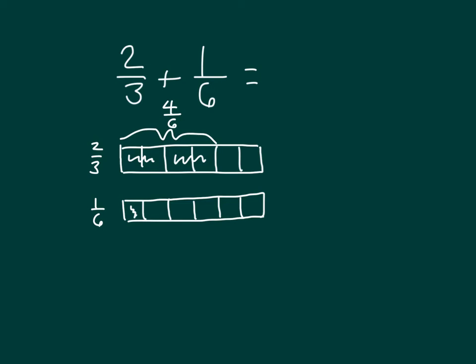And since I now have like units, I can just take four-sixths and add it together with one-sixth to be able to get five-sixths. So two-thirds plus one-sixth equals five-sixths. And five-sixths is in simplest form.